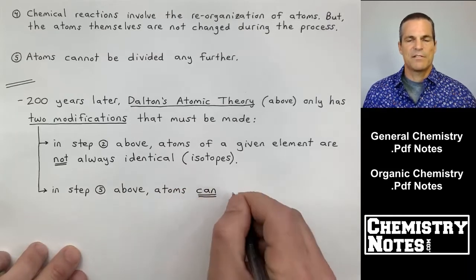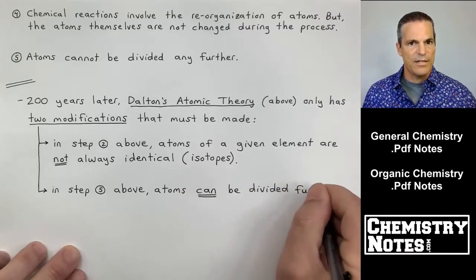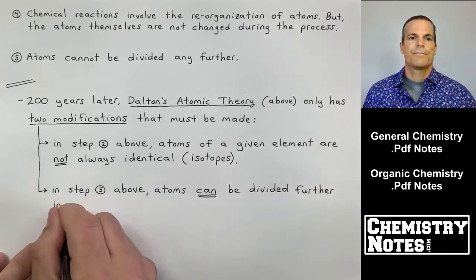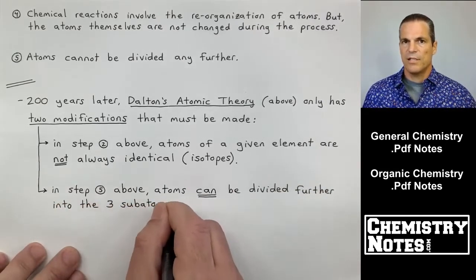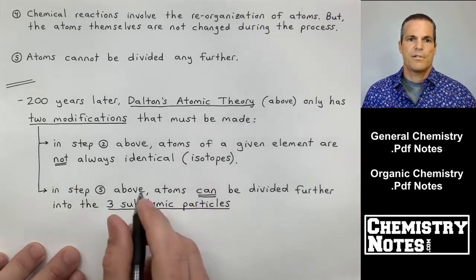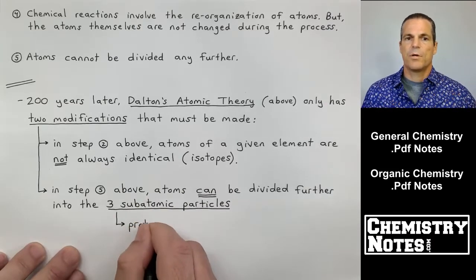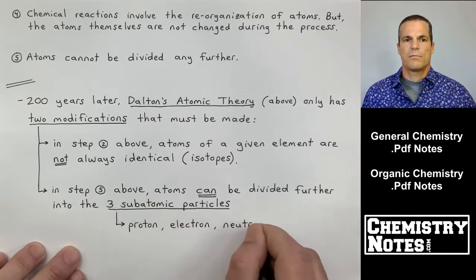Now in step five, this is one I just mentioned. In step five above, atoms can be divided further into the three subatomic particles: protons, electrons, and neutrons. All right, so let's write that down so we have it in our notes. Proton, electron, and neutron.